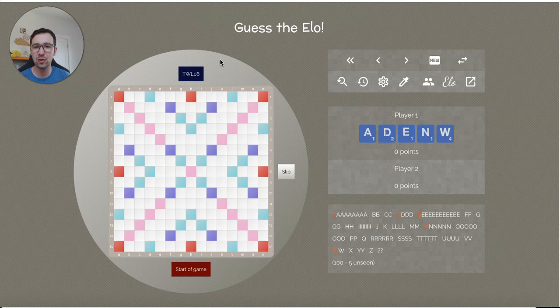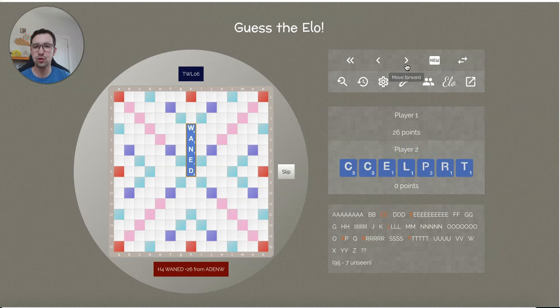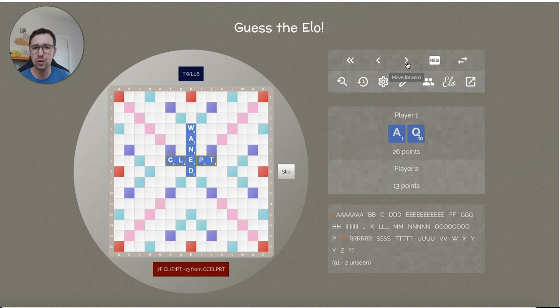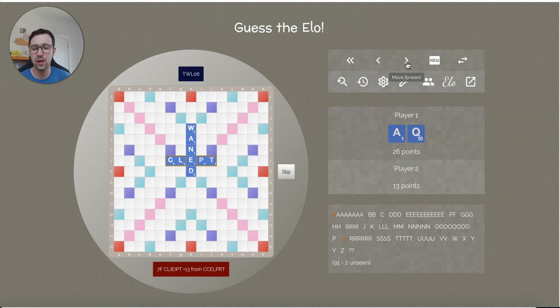We only have partial racks for Player 1. I assume they're going to open with waned, and they do. Player 2 is the annotator, so we'll have full racks for Player 2. A little bit consonant-heavy, could maybe see something like Accept through the A in waned. They go with Clept through the E in waned, which is very reasonable. It's a bit of a point sacrifice, but it keeps REC, which is a very strong leave. Probably not what I would have done, but I don't mind it.